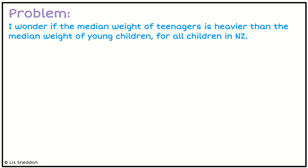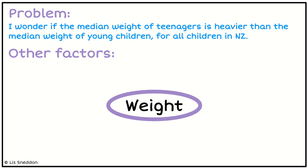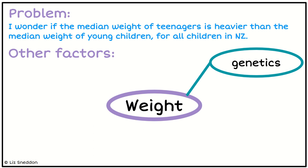In terms of other factors, I start with a little brainstorm and think: what else affects weight, other than whether they're teenagers or young — which is kind of like an age factor. So what else could affect it? Well, genetics. Some of my friends are particularly tall or particularly short, and that often comes in families, so there may be some genetic component to the weight issue.